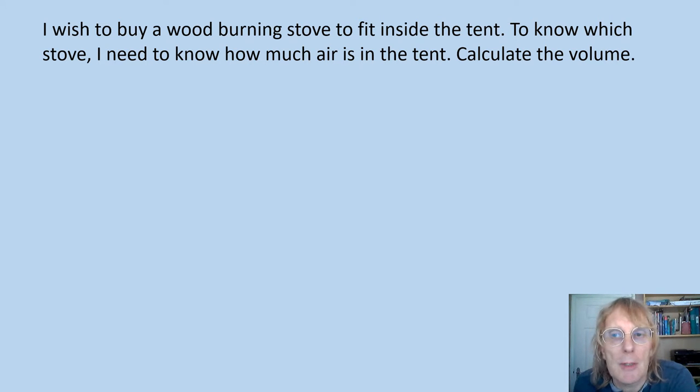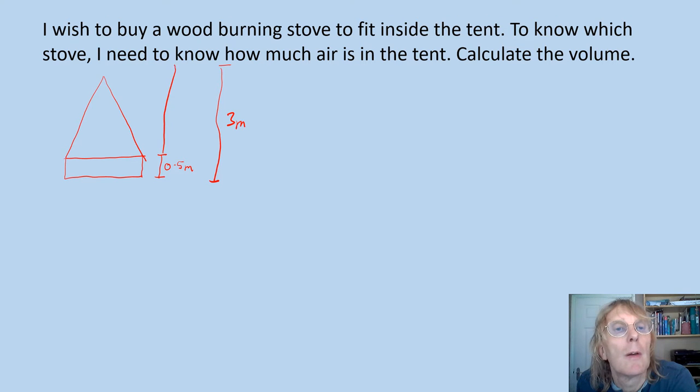But let's have a look at today's stuff. Today I want to look at - we're going to buy a wood burning stove to fit inside the tent. I want to know how much air is in the tent, so we need to calculate the volume. So we look at the diagram of it again. The tent is basically a triangle on top of a rectangle if we look at it in 2D. It's a cone on top of the cylinder. So the sidewall is 0.5 meters, all the way to the top is 3 meters. So going part way up that's going to be 2.5 meters. So we need to know the volume of the cone plus volume of the cylinder.